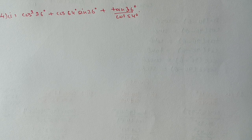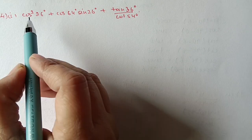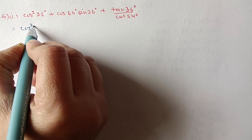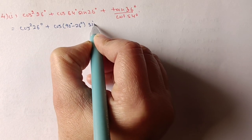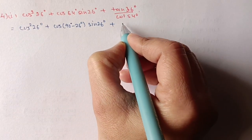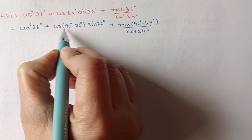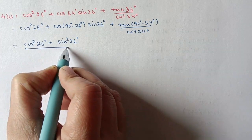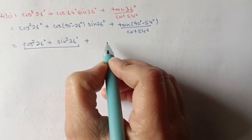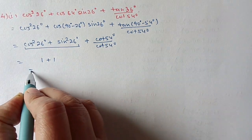Question 4, first part: cos²26° + cos 64° · sin 26° + tan 36° / cot 54°. Write cos 64° = cos(90° − 26°) = sin 26°, so the middle term becomes sin²26°. We now have cos²26° + sin²26° = 1 by the first identity. For the last term, write tan 36° = tan(90° − 54°) = cot 54°, so cot 54° / cot 54° = 1. Final answer: 1 + 1 = 2.